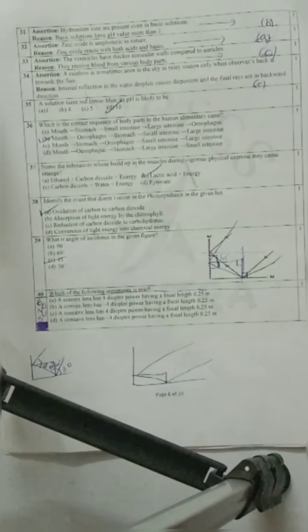Question 37: Name the substance whose build up in the muscle during vigorous physical exercise may cause cramps. Cramps are always caused by deficiency of what? When there is deficiency of lactic acid in our body. So lactic acid plus energy - option B is your correct option.